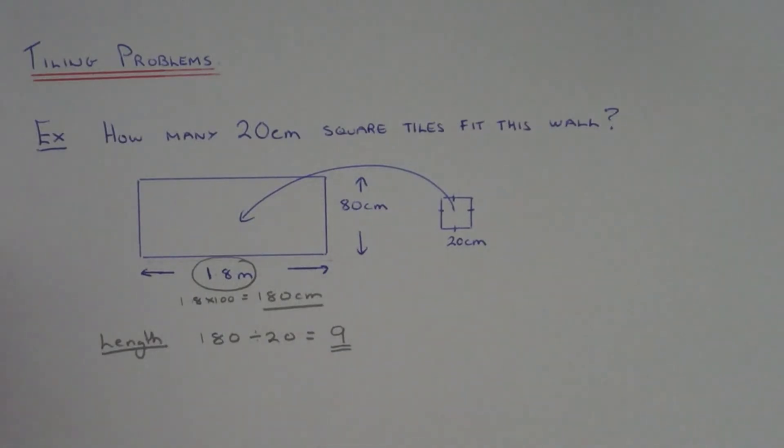The next thing is to repeat this for the height of the wall. Divide the height of the wall by the height of the tile. So this will be 80 divided by 20.